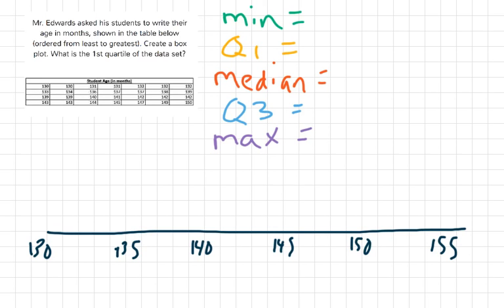Okay, so in order to create a box plot of these values, we need five different statistical values about this data. We need the minimum, the maximum, the median, which is the value in the middle, and then we need the first and third quartile values.